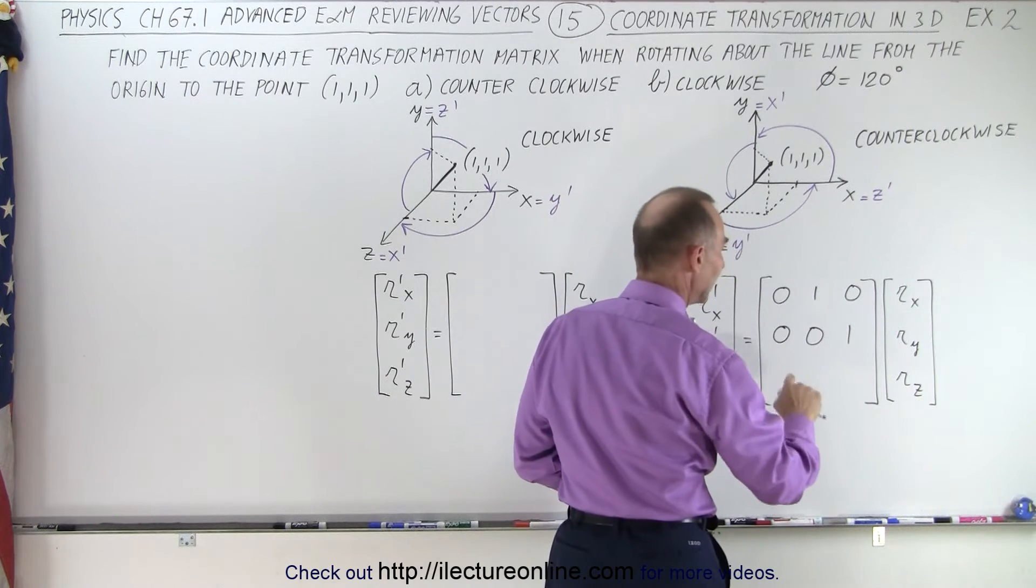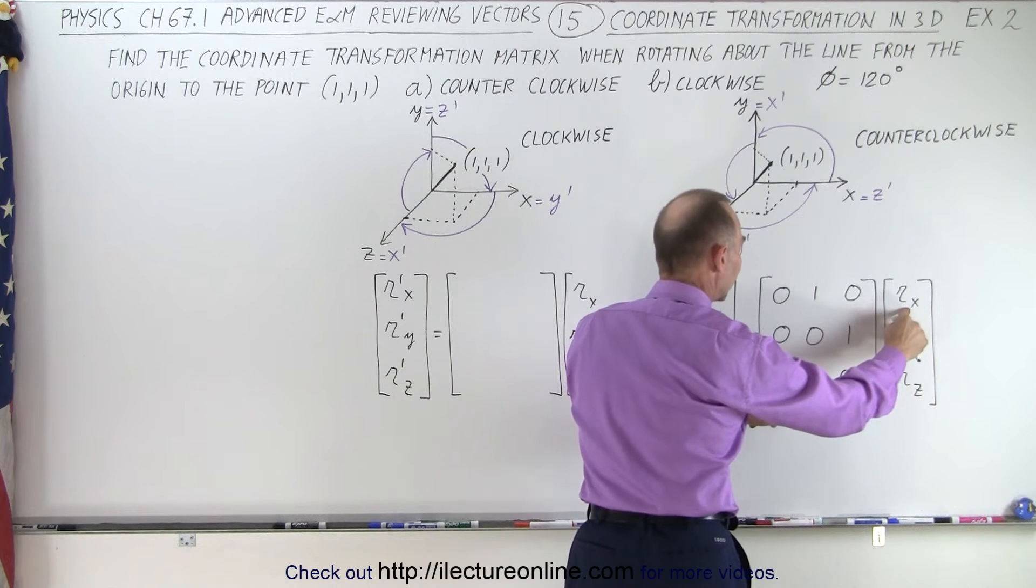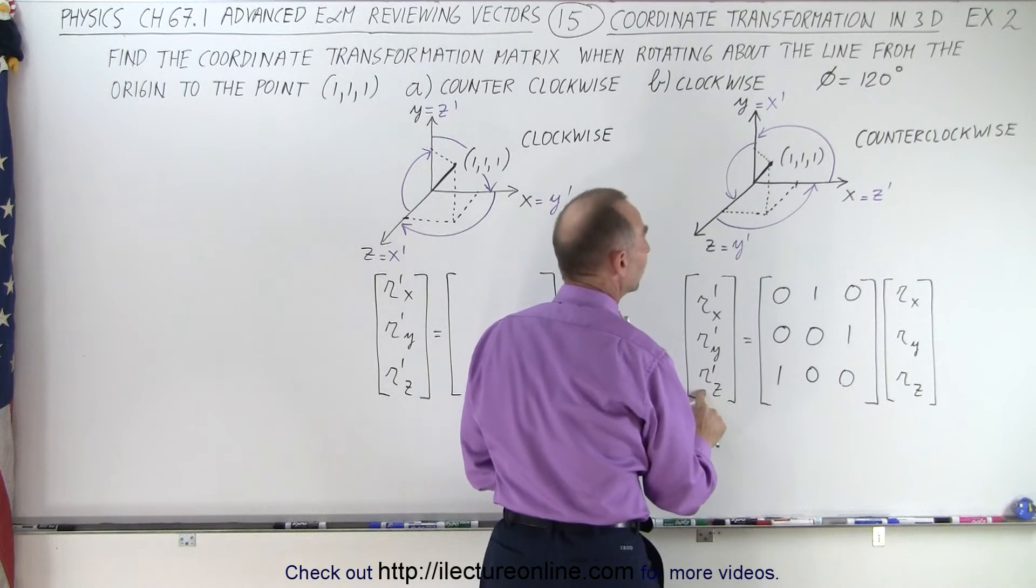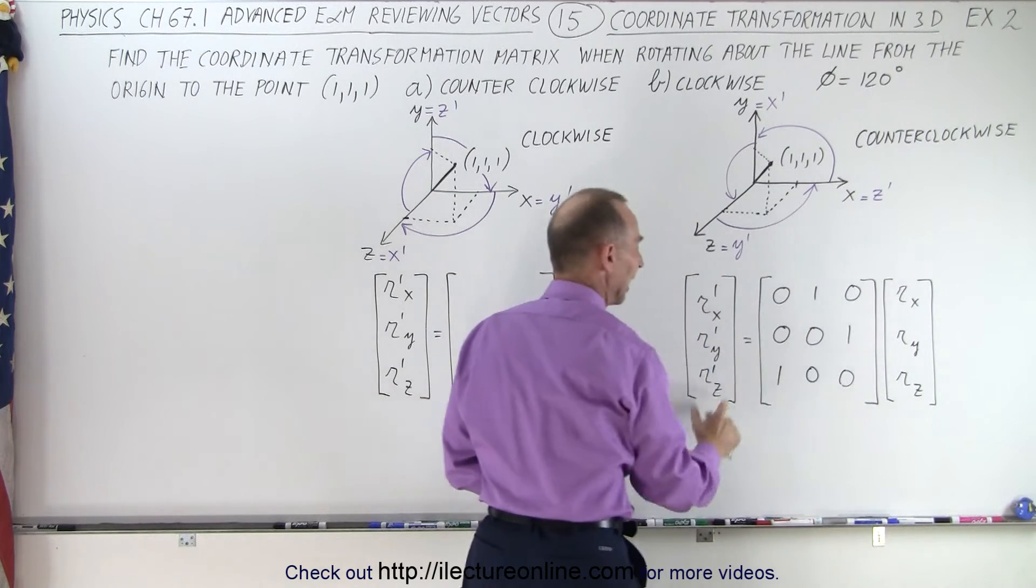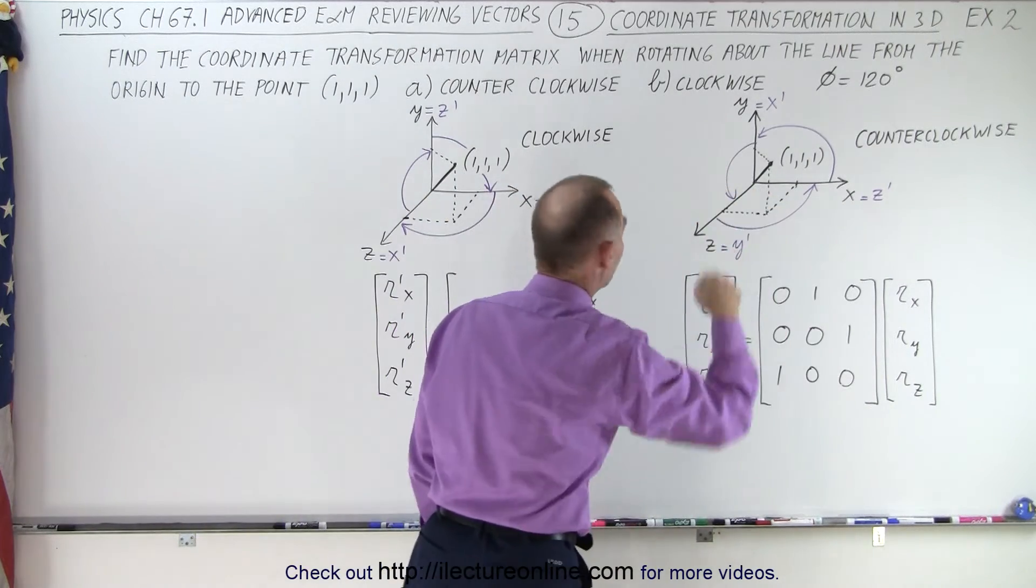And finally, I need a 1 over here and a 0 and a 0 because 1 times RX plus 0 plus 0 will give me R prime Z. So X equals Z prime. And so I get the proper transformation like that. And that's when I rotate in a counterclockwise direction.